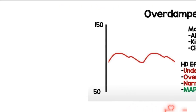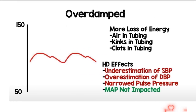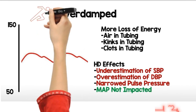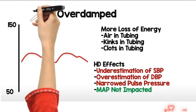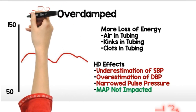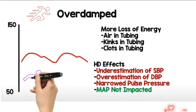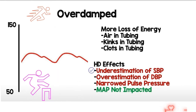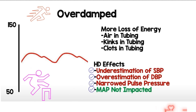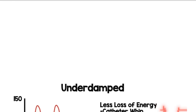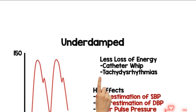A heart rate going way too fast can also cause an under-damped arterial line. The hemodynamic effects of over-damping are: it will underestimate your systolic blood pressure, overestimate your diastolic blood pressure, and you're going to have a much narrowed pulse pressure. Mean arterial blood pressure is not impacted.